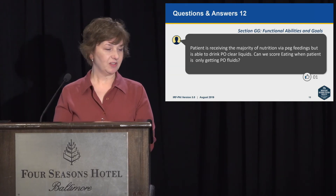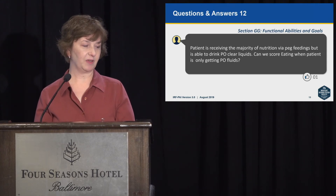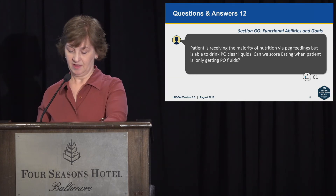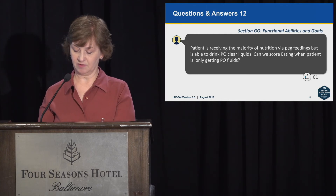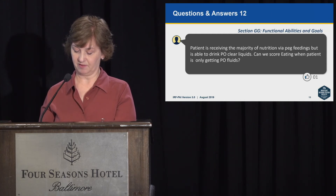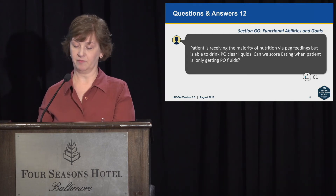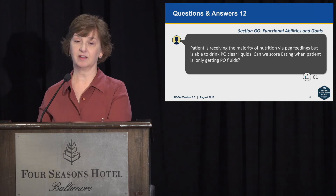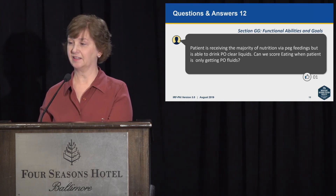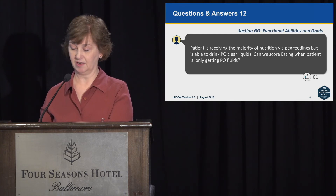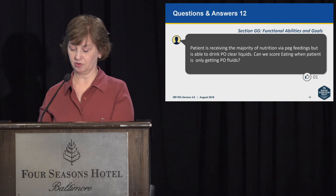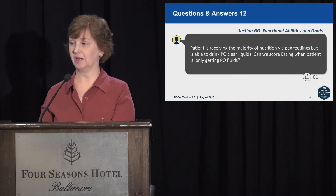Number 12: a patient is receiving the majority of nutrition via PEG feedings but is able to drink PO clear liquids. Can we score eating when the patient is only getting PO liquids? The intent of GG0130A, eating, is to assess the patient's ability to use suitable utensils to bring food and/or liquid to the mouth and swallow once the meal is placed before the patient. Clinicians should use clinical judgment to determine if observing the patient taking clear liquids allows adequate assessment. If adequate, code based on the type and amount of assistance required. If unable to determine, code one of the activity not attempted codes.